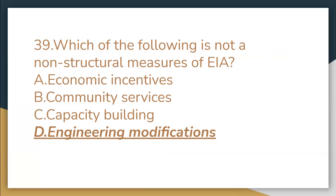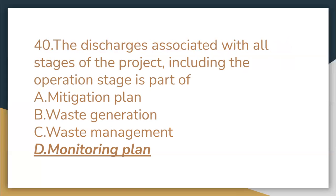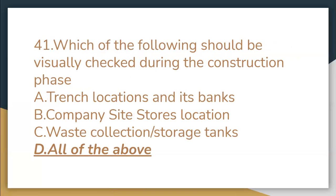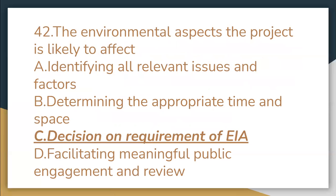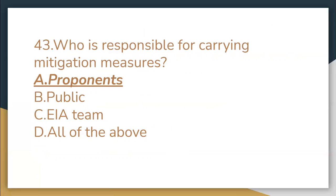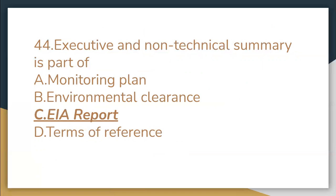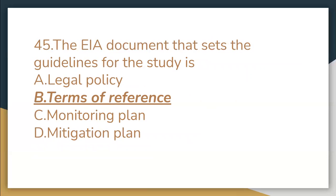Which of the following is not a non-structural measure of EAA? Engineering modification. The discharge associated with all stages of the project including the operation stage is part of the monitoring plan. Which of the following should be visually checked during the construction phase? All the above. The environmental aspects of the project are likely to affect the decision on the requirement of EAA. Who is responsible for carrying out mitigation measures? Proponents. Executive summary is part of the EAA report. The EAA document that sets the guidelines for the study is the terms of reference.